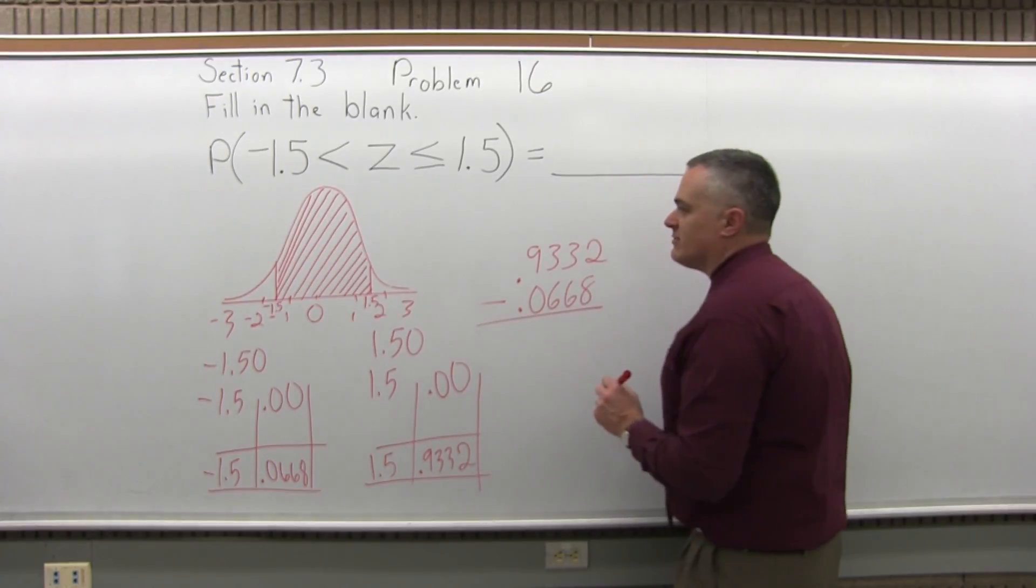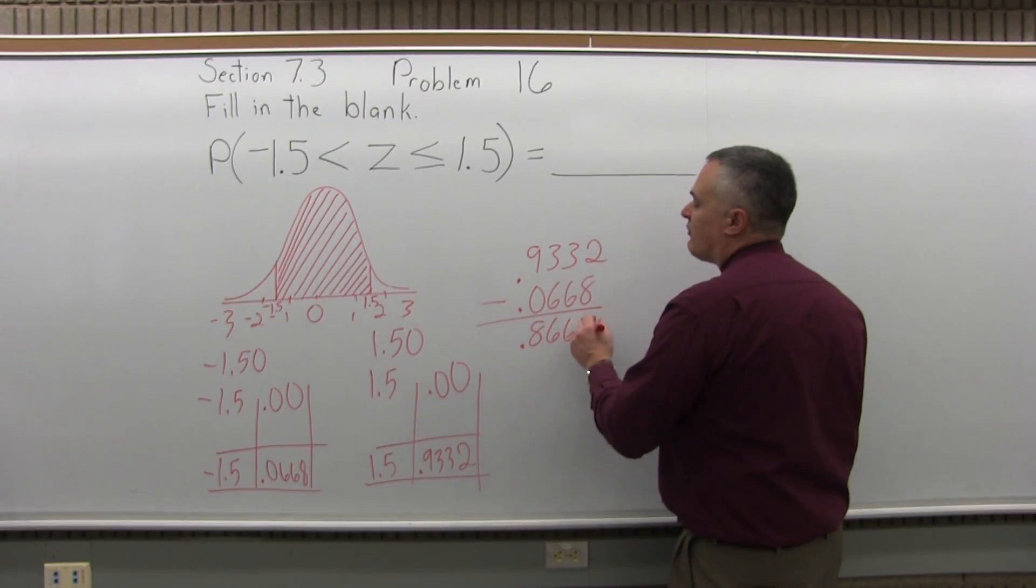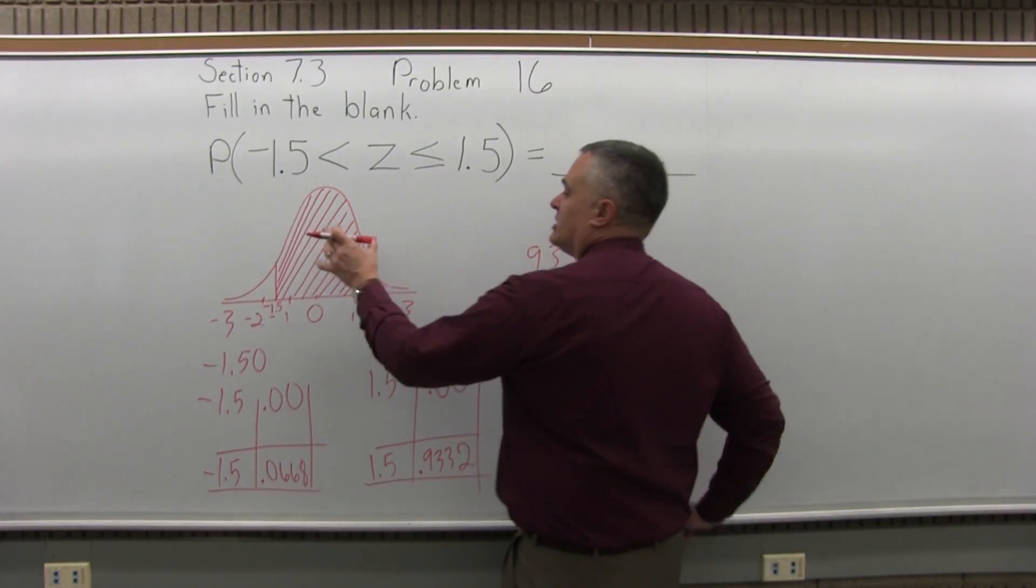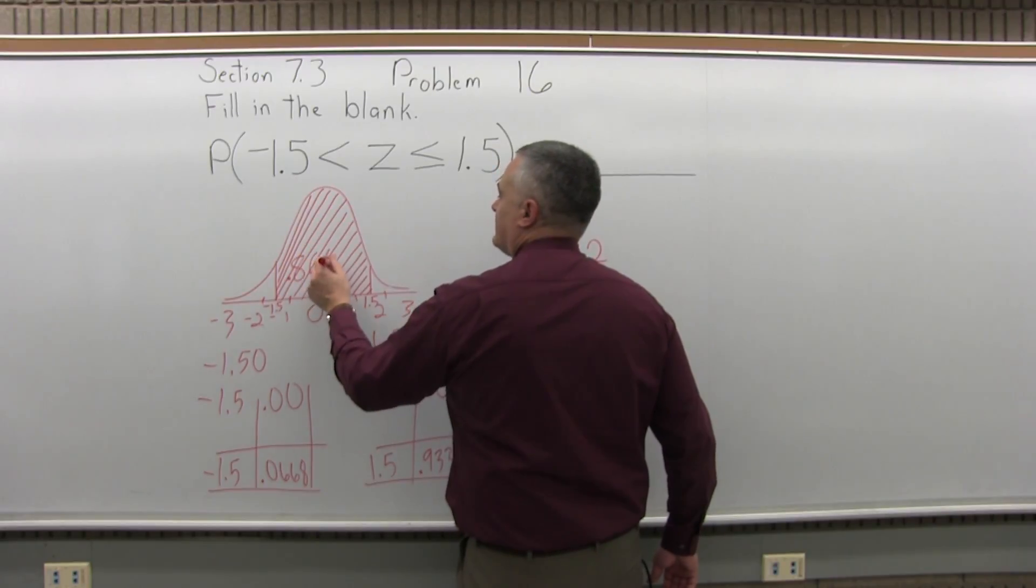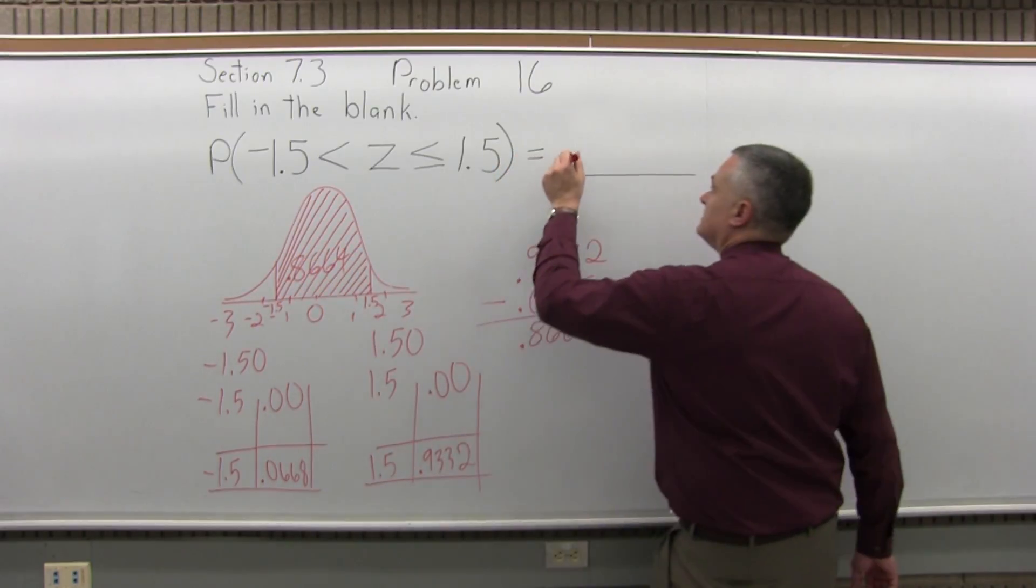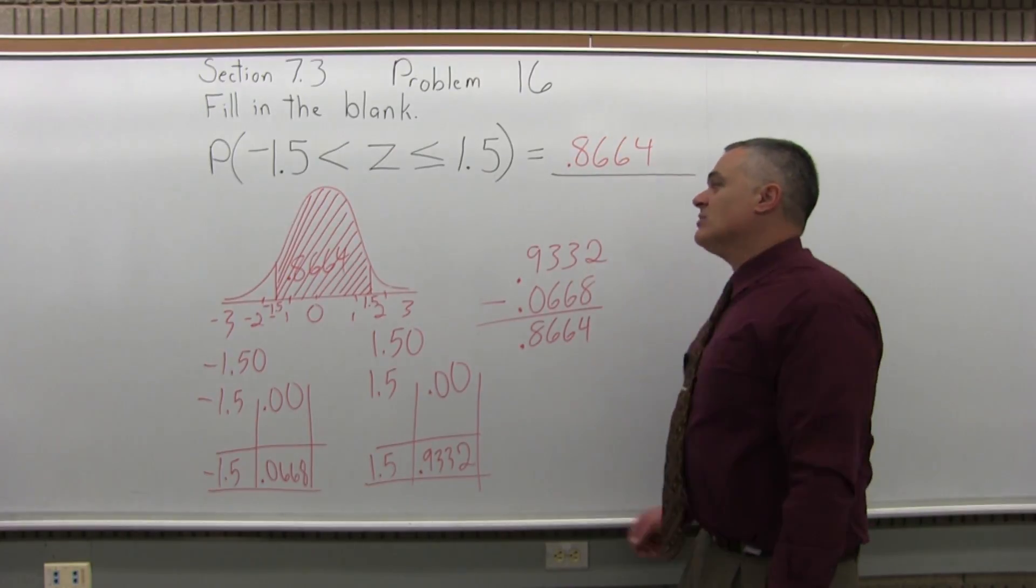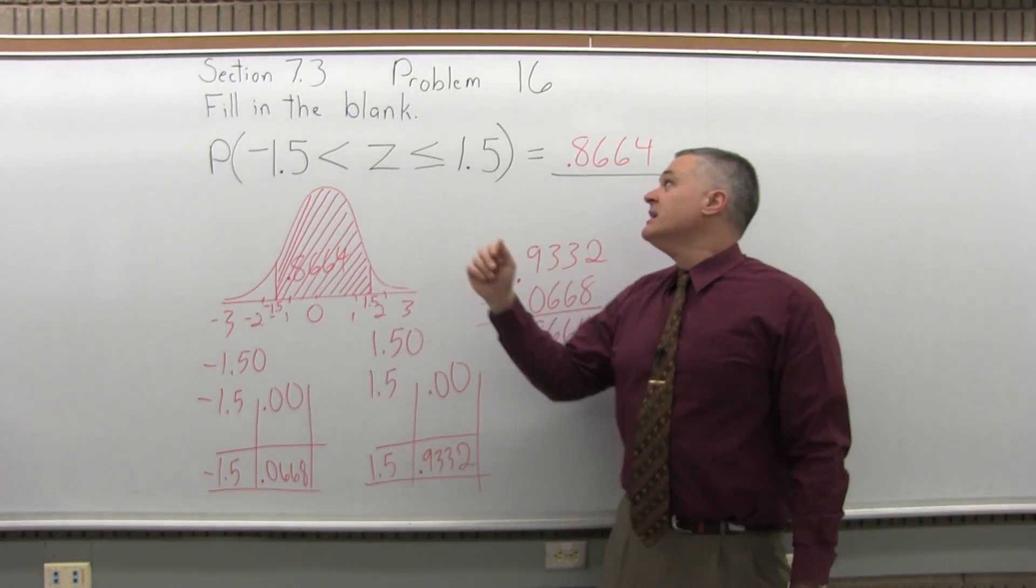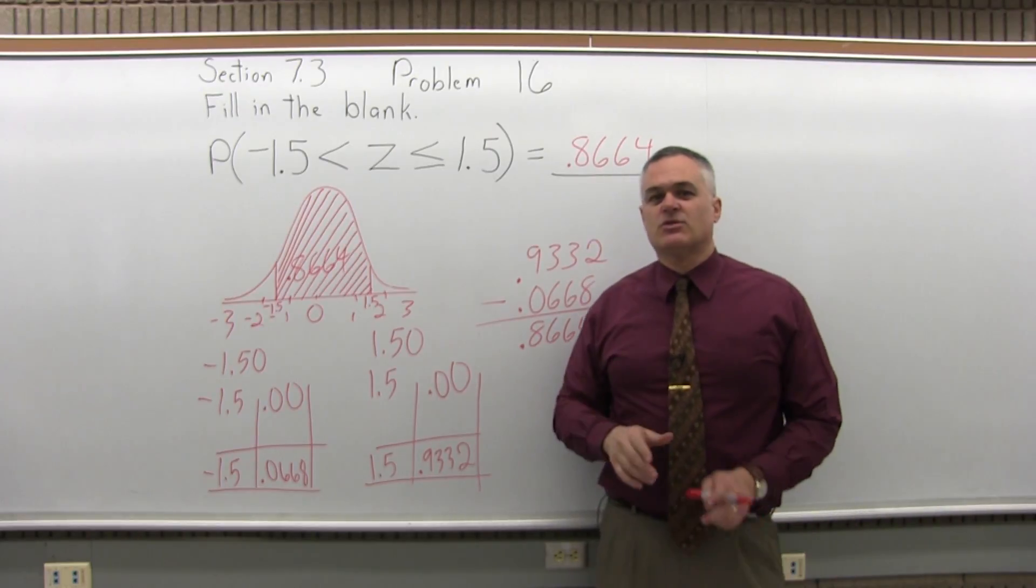And if I subtract those, I get 0.8664. And that's the answer that fills in the blank. That middle shaded portion of the drawing that I made in the beginning of the problem is 0.8664. So the probability that Z is between negative 1.5 and positive 1.5 is a little less than an 87% probability, like 86 and 2/3rds percent.